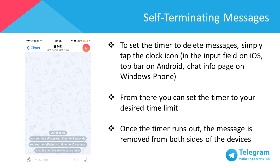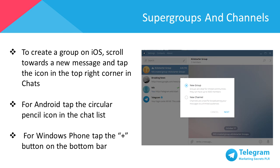The timer starts to run when the message is shown on the recipient's screen. Once the timer runs out, the message is removed from both sides of the devices. The Telegram group chat feature allows you to chat and interact with up to 200 group members at once by default, and can be enhanced into a supergroup, which increases up to 5,000 group members.